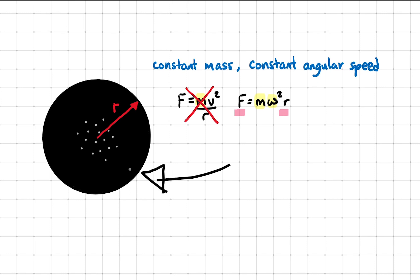If a dust particle is further away from the center of the disk, that means its radius is larger. So if radius increases, the centripetal force needed to keep the dust particle in circular motion increases.